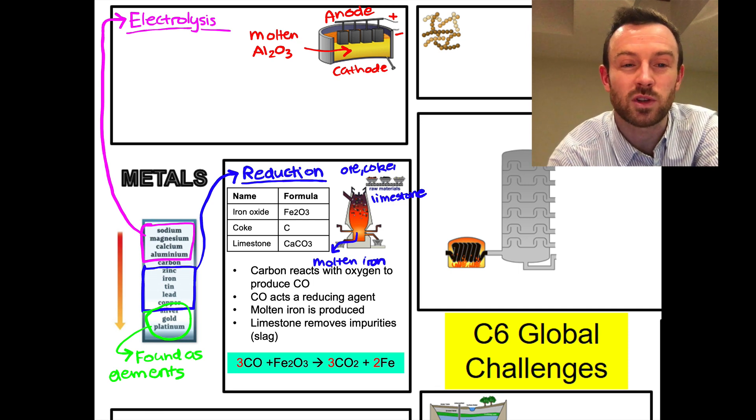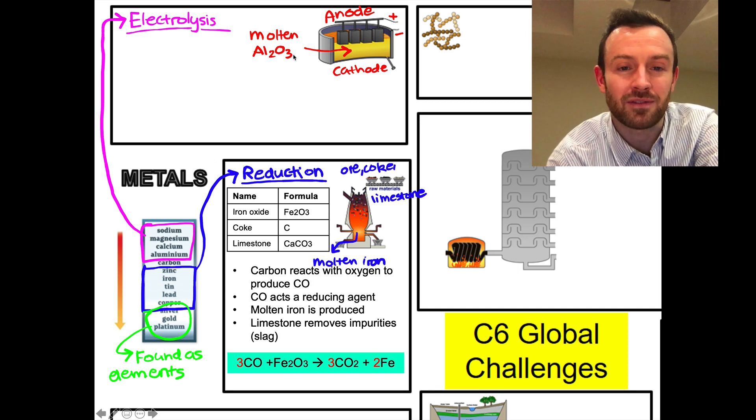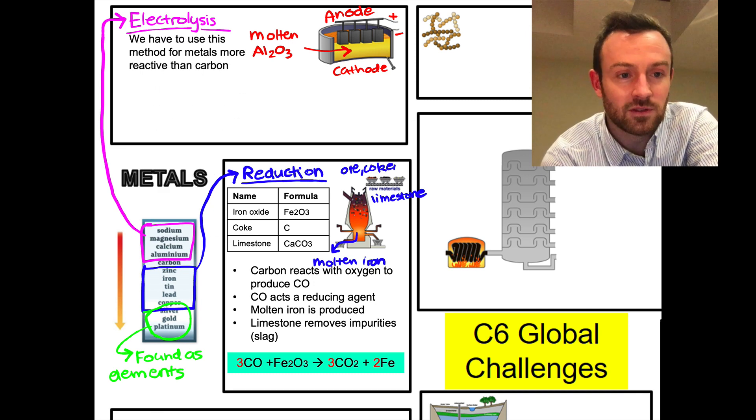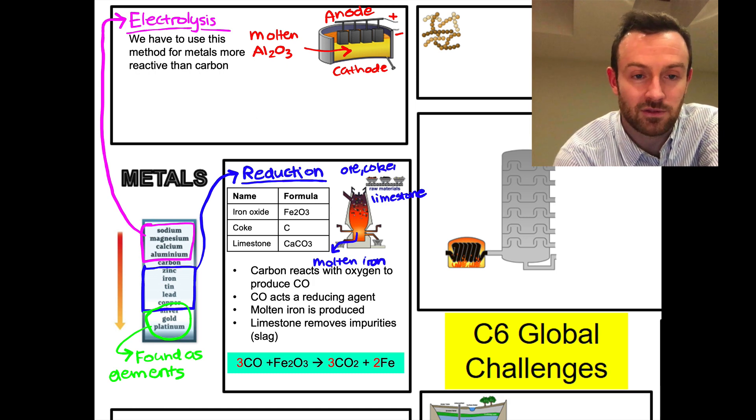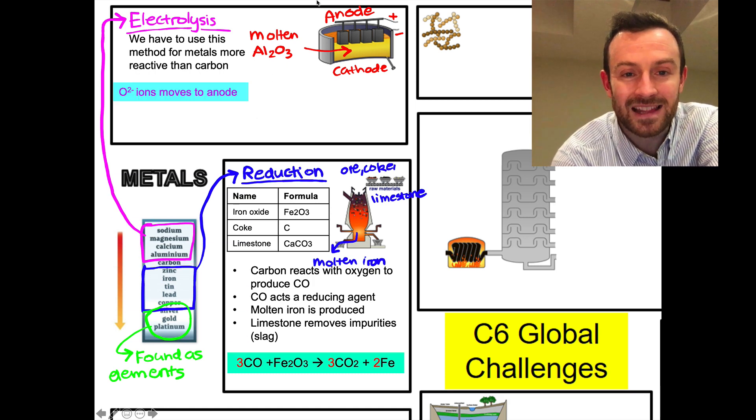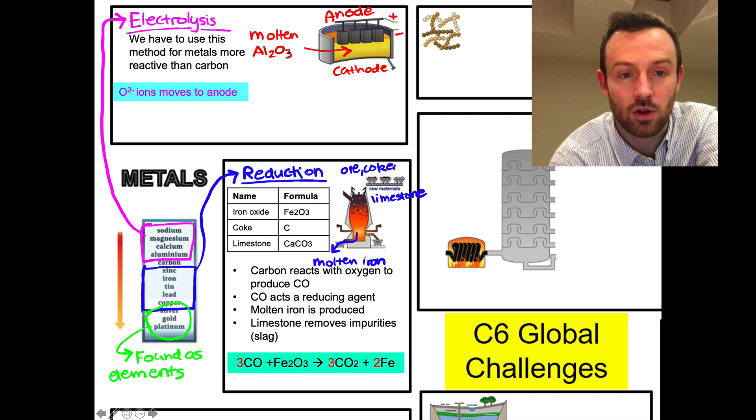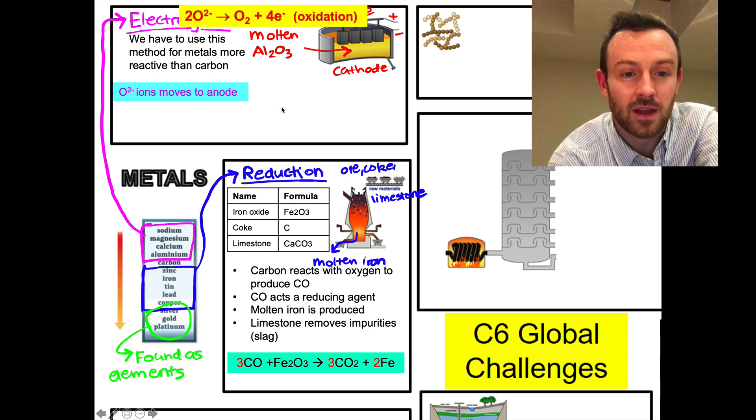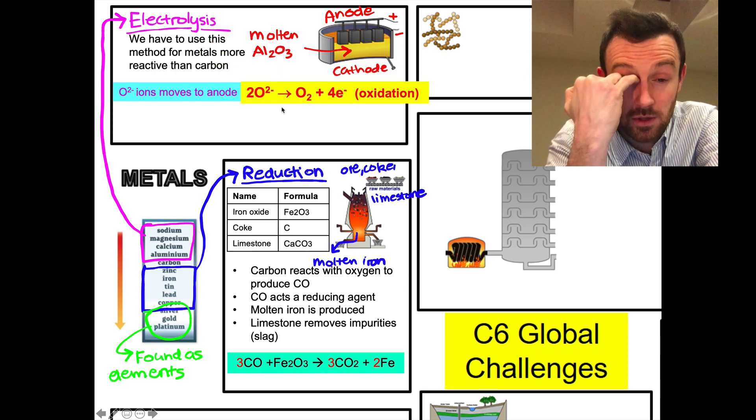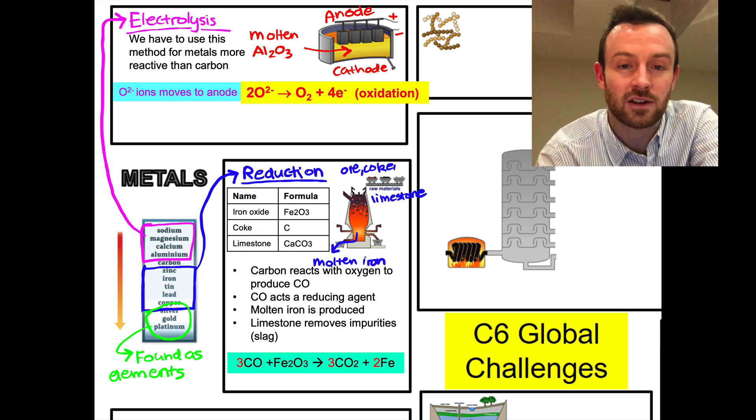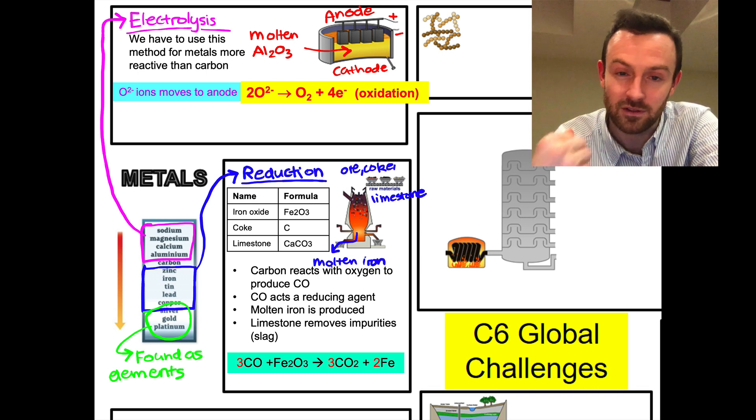So what happens? Well, first of all, we have to use this method for metals that are more reactive than carbon. There's two things really that are going on. First of all, at the anode, the ions - the oxygen 2- ions - they move to the anode because it's positive. And when they get there, those oxygen ions get rid of their electrons, they give their electrons away to the positive anode. The positive anode takes them in.